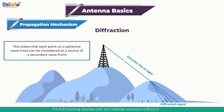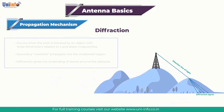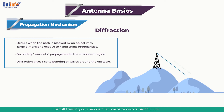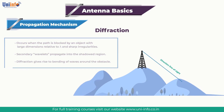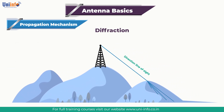Diffraction is more pronounced when the obstacle becomes sharper and more like a knife edge. For a radio signal, the definition of a knife edge depends upon the frequency and hence the wavelength of the signal. For a low-frequency signal, a mountain ridge may provide a sufficiently sharp edge, while a more rounded hill will not produce as marked an effect. It is also found that low-frequency signals diffract more markedly than higher-frequency ones.